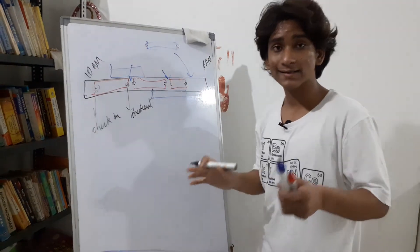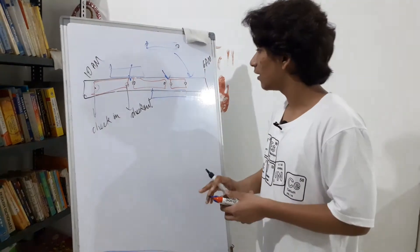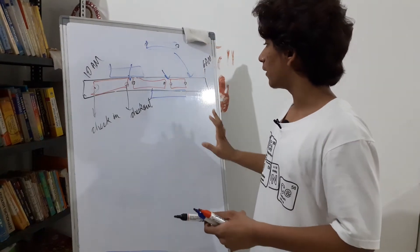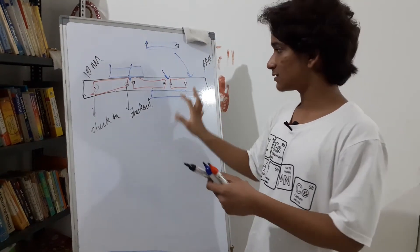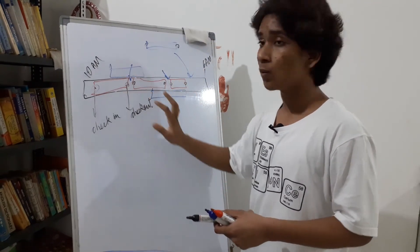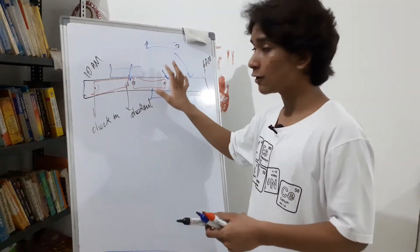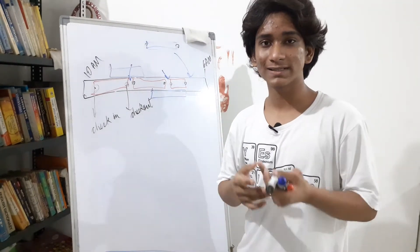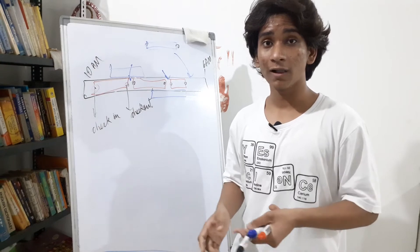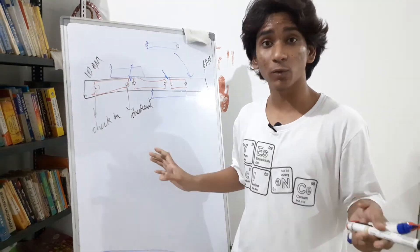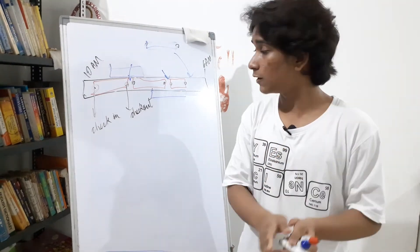Every interval has a starting time and an ending time. What you want to make sure is that two intervals don't overlap — because if they overlap, two people are going to book the same hotel room for the same interval, and that's exactly what we want to avoid.